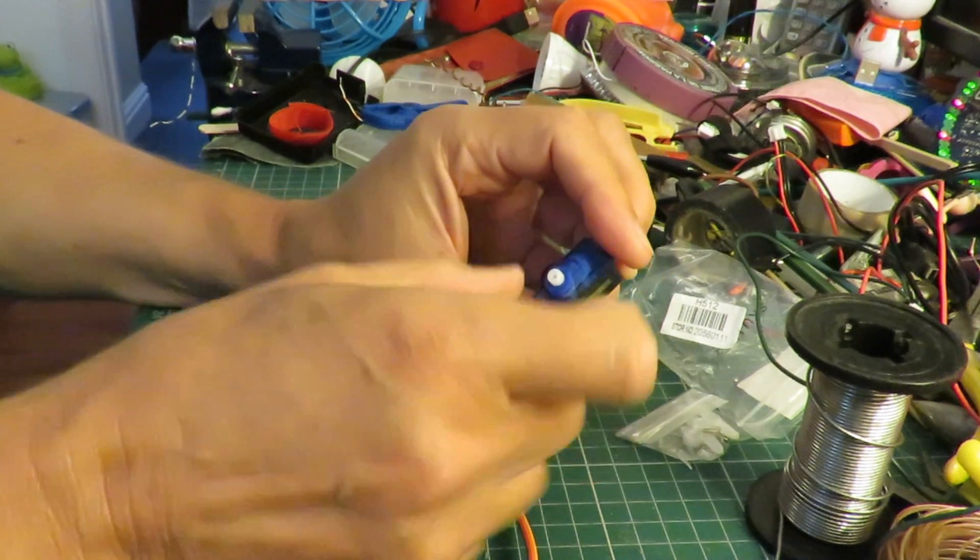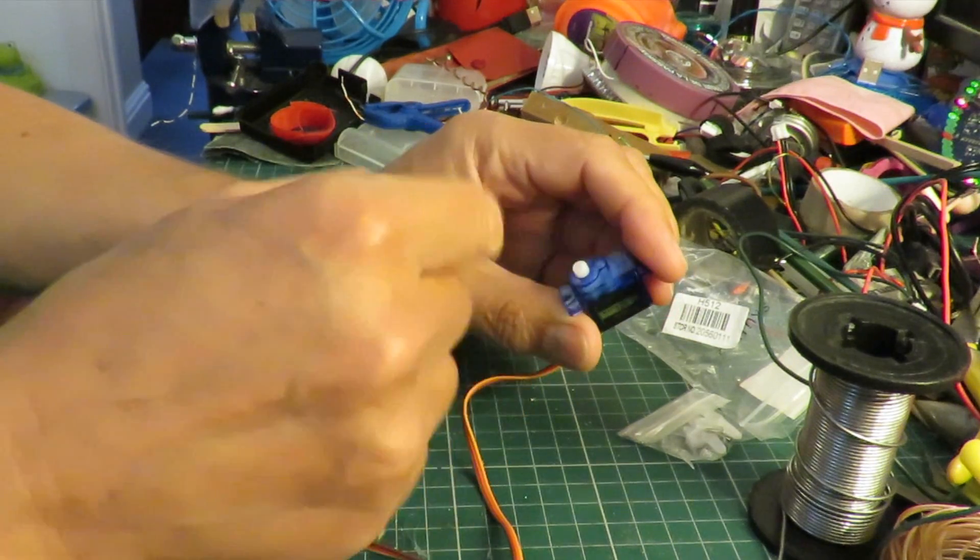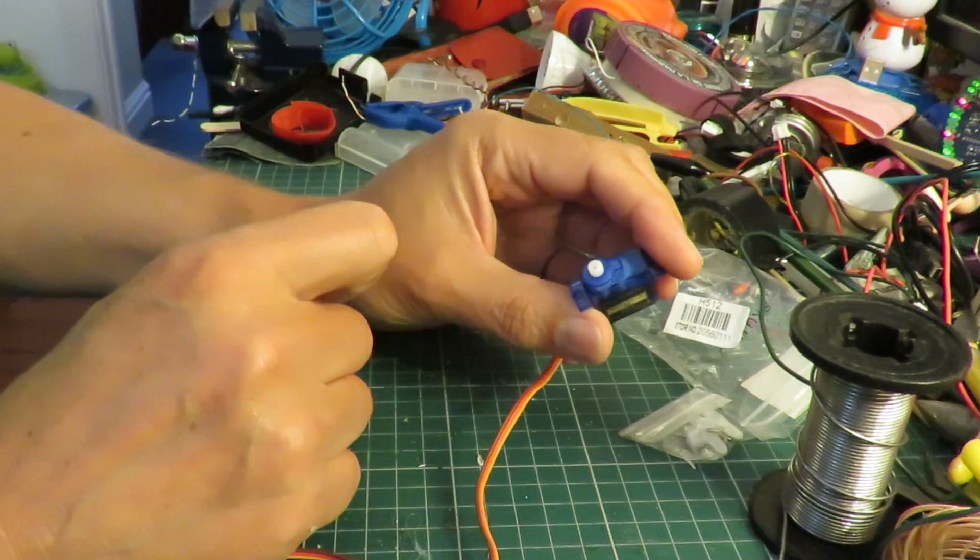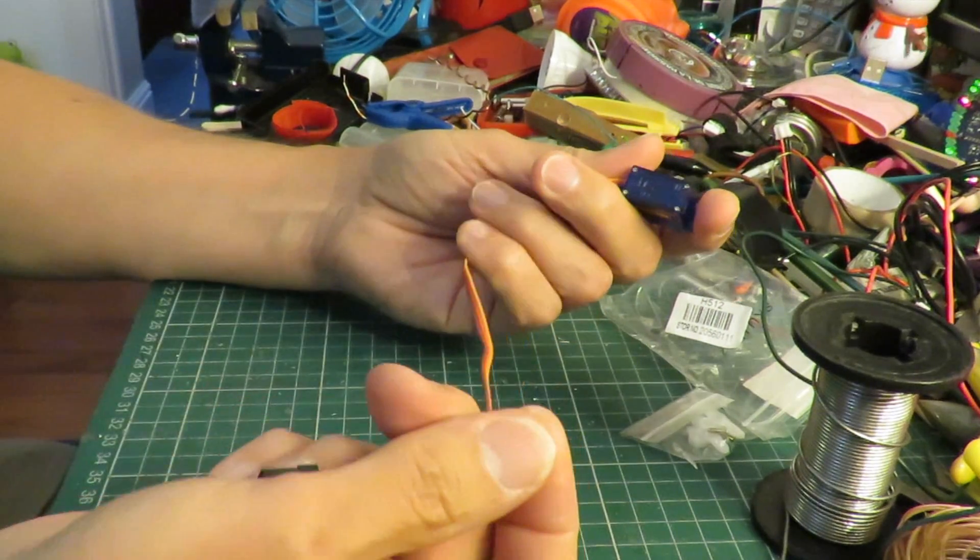Normally a servo only turns part of a turn, there's a little stop in it that we need to take out so it'll do a continuous 360 degree rotation and that's what I'm going to do.